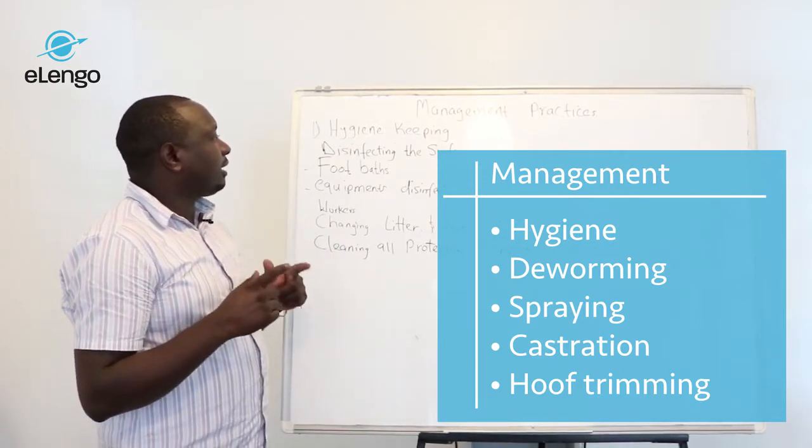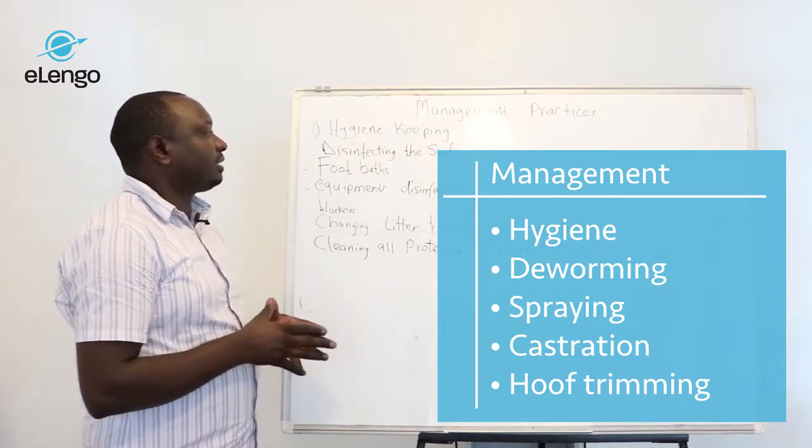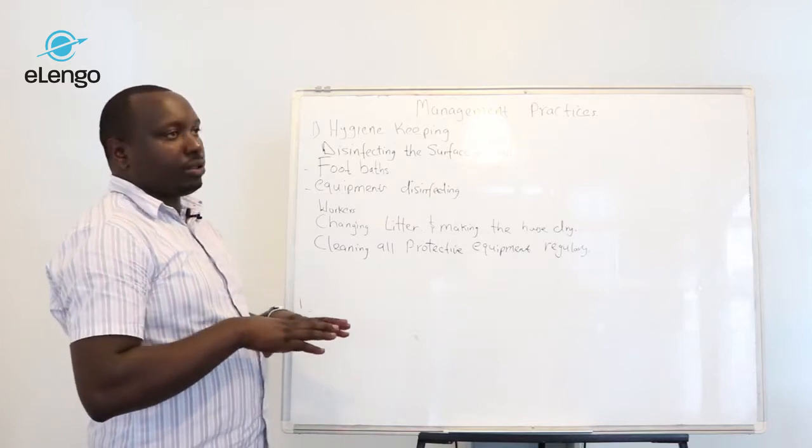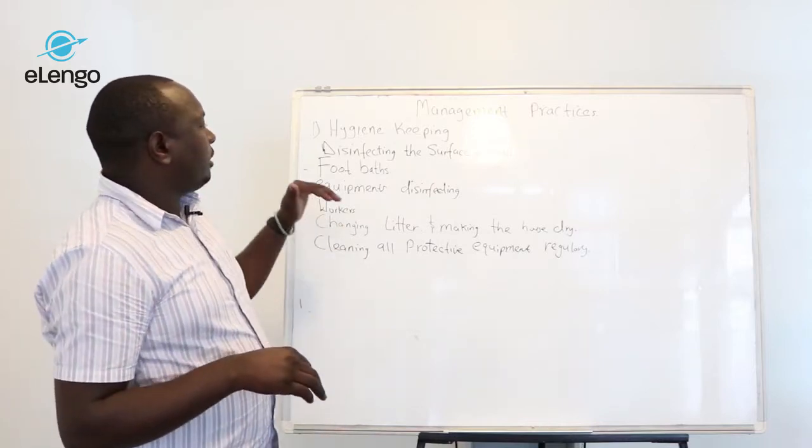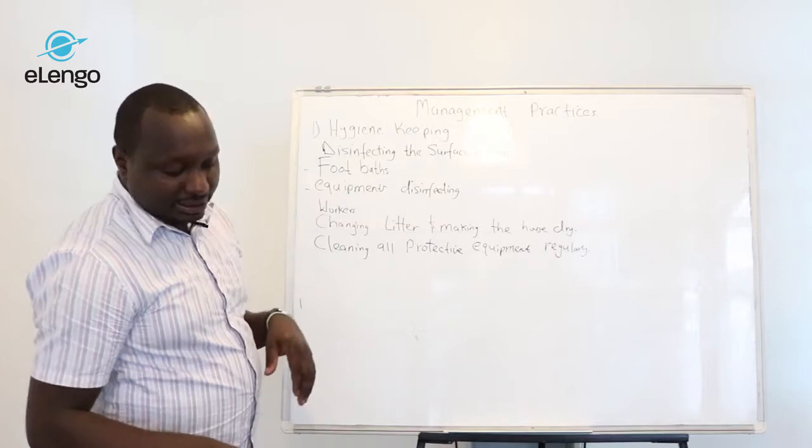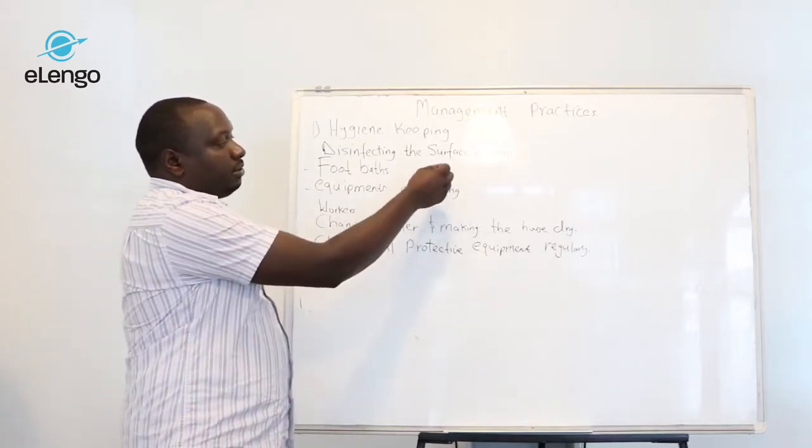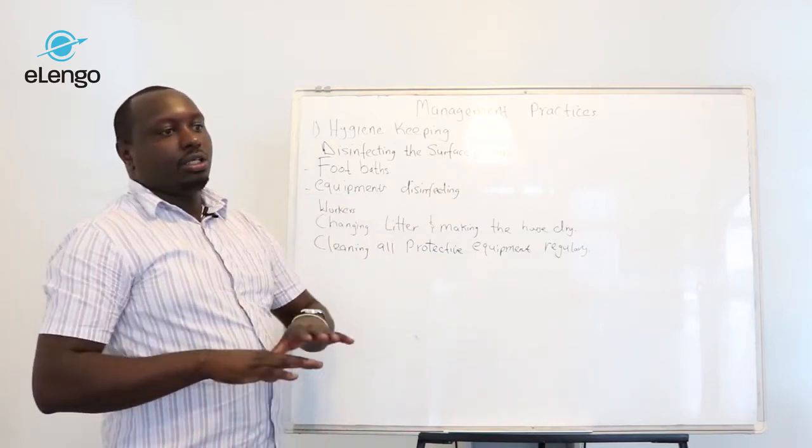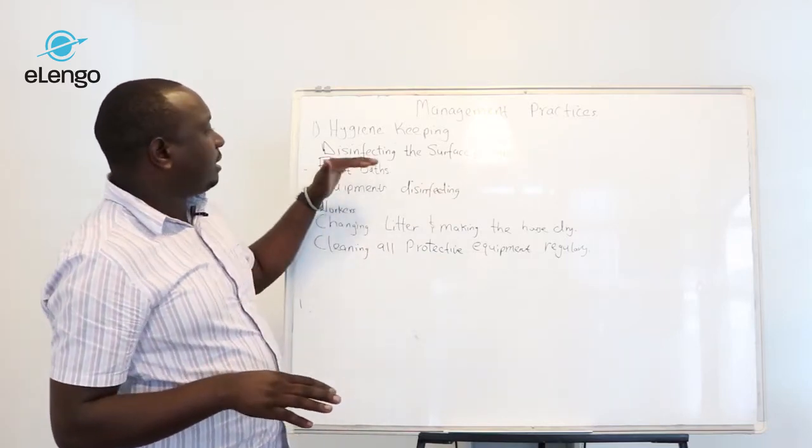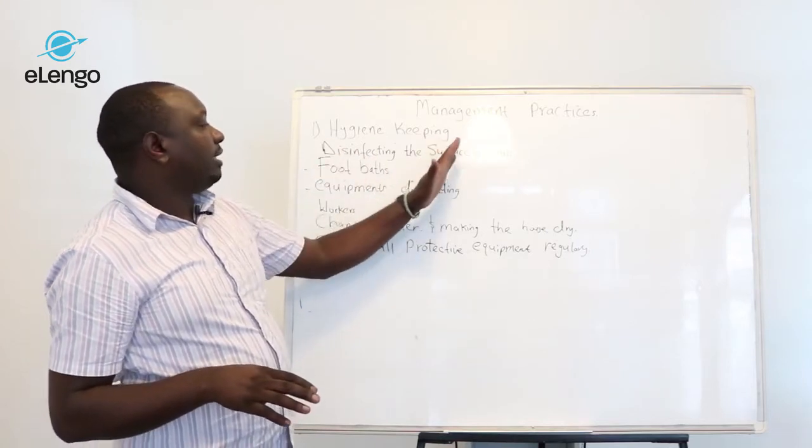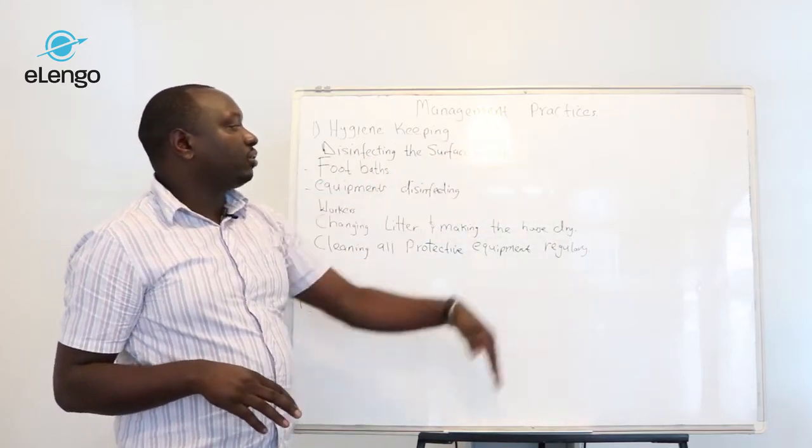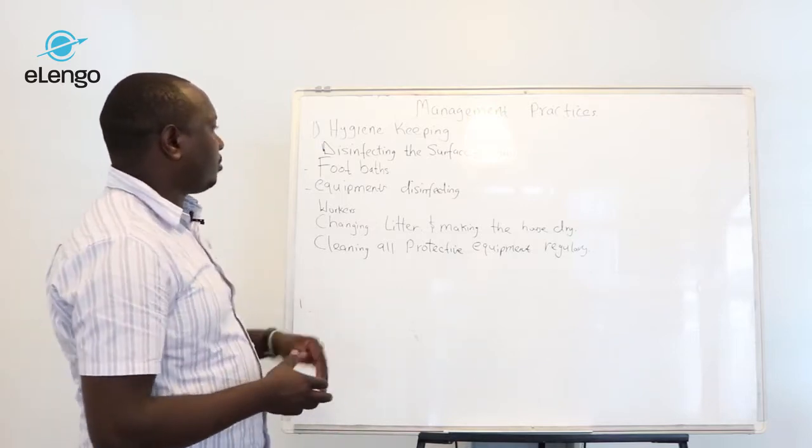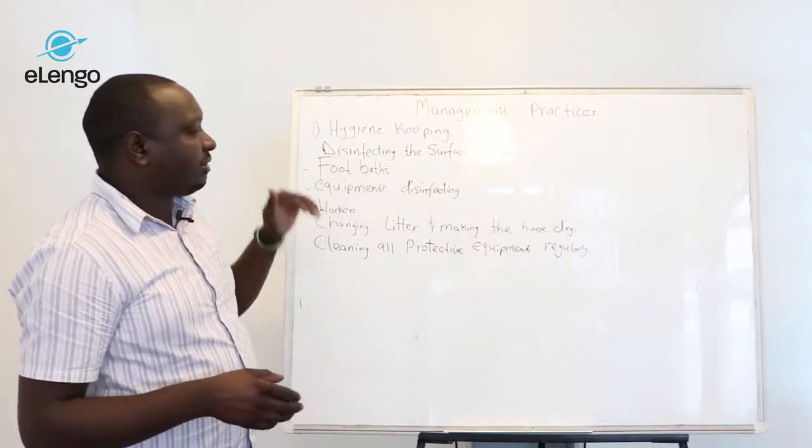The first important way to maintain hygiene in the farm is disinfecting the surfaces, for example the walls, the tables, and also the milking parlor. You disinfect using a disinfectant of choice which is very appropriate and effective. You spray all the surfaces, you can wipe to ensure that the surfaces don't have any organism that can cause contamination or diseases such as mastitis.